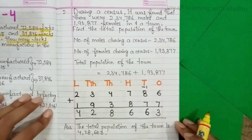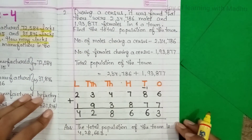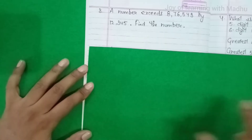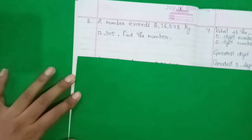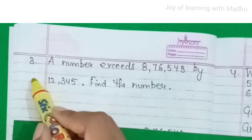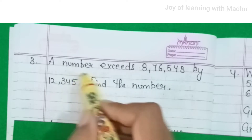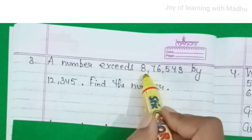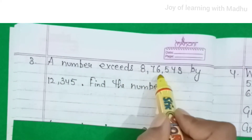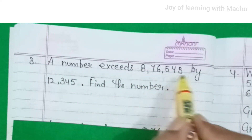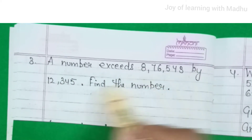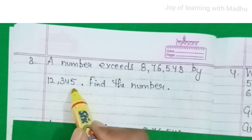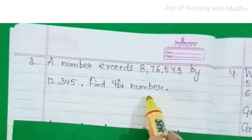This question is solved. Come to the next. Students, now we'll do the third question. A number exceeds 8,76,543 by 12,345. Find the number.